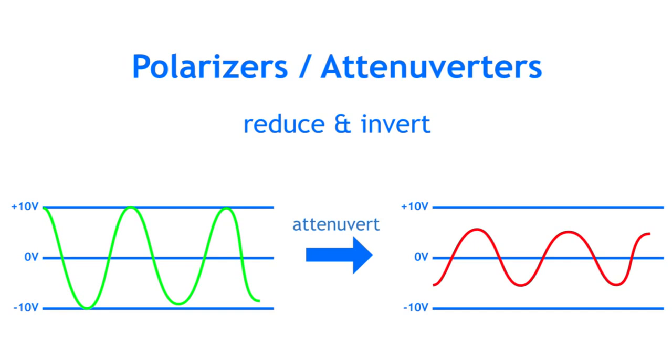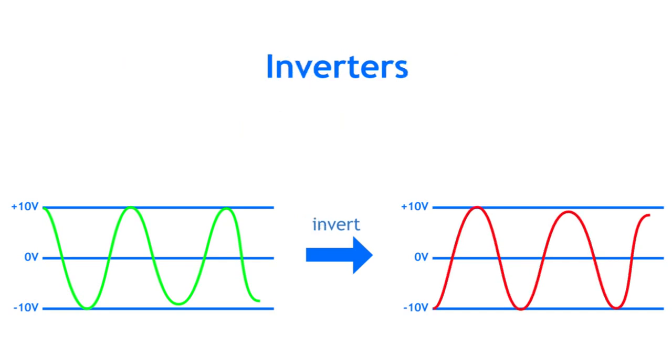Negative or inverted signals are useful when you want to subtract one CV from another, or when you need a mirrored version of a signal, for example an ADSR envelope or LFO. There are also modules that just invert a signal without the option to attenuate it.